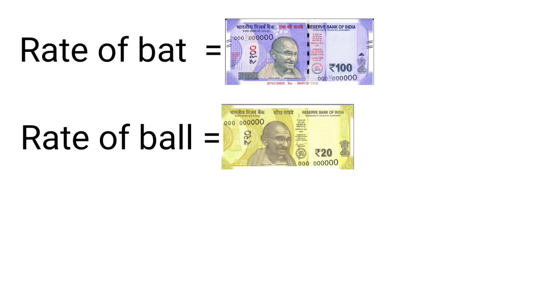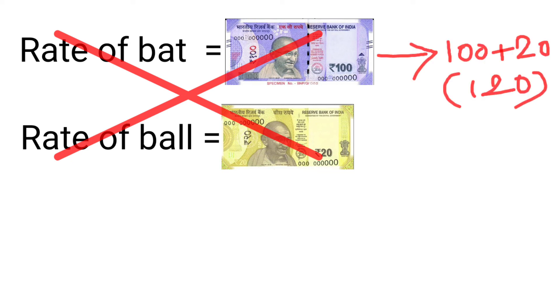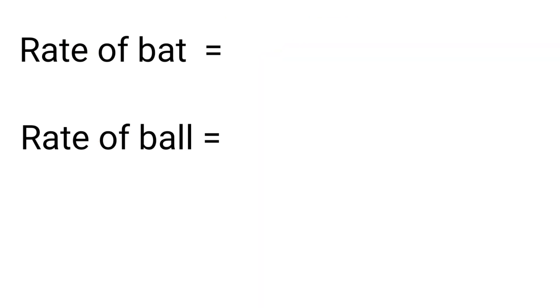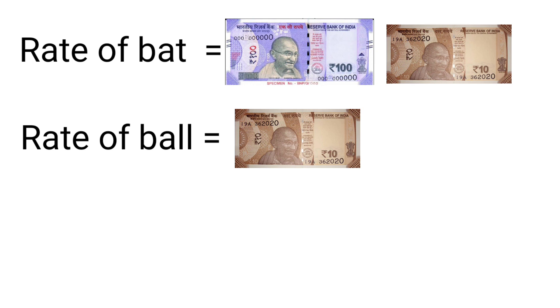If you say the answer is bat = Rs. 100 and ball = Rs. 20, that is completely wrong. The correct answer is: the rate of the bat is Rs. 110 and the rate of the ball is Rs. 10. Was it clear?